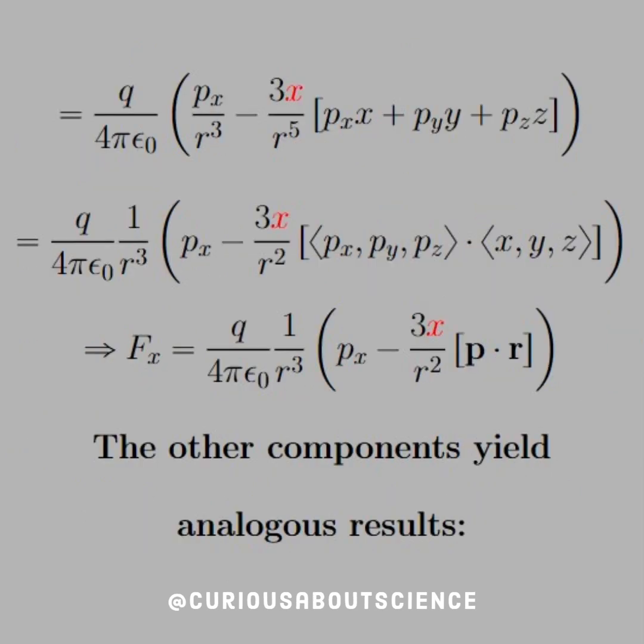And from here, we'll see how this simplifies down. So every term except that first term in the parentheses has a factor of negative 3X over R to the fifth. Once we factor that out, we see that we're left with an expression in the bracket that looks very familiar. In the next line, along with factoring out a factor of 1 over R cubed, we note that we can write that expression in the bracket as a dot product.